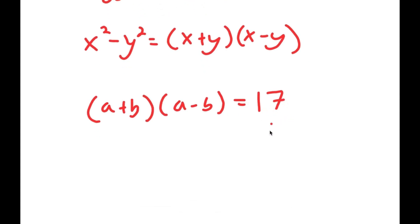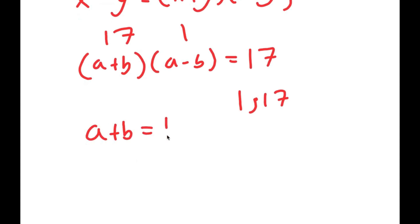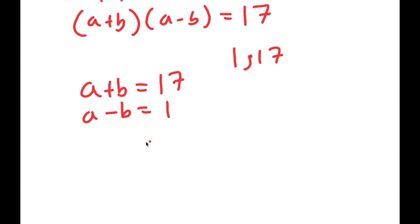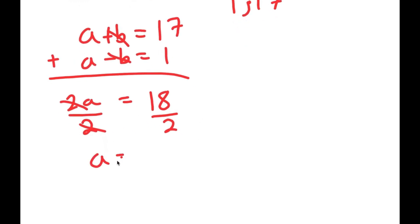Now, the only factors of 17 are 1 and 17, meaning that one of these two factors has to be 17 and the other has to be 1. Since a plus b is greater than a minus b, a plus b is going to be 17 and a minus b is going to be 1. So I have two equations: a plus b equals 17 and a minus b equals 1. Adding these two equations together: a plus a is 2a, b minus b cancels out, and 17 plus 1 is 18. So 2a equals 18, and dividing both sides by 2, I get a equals 9.